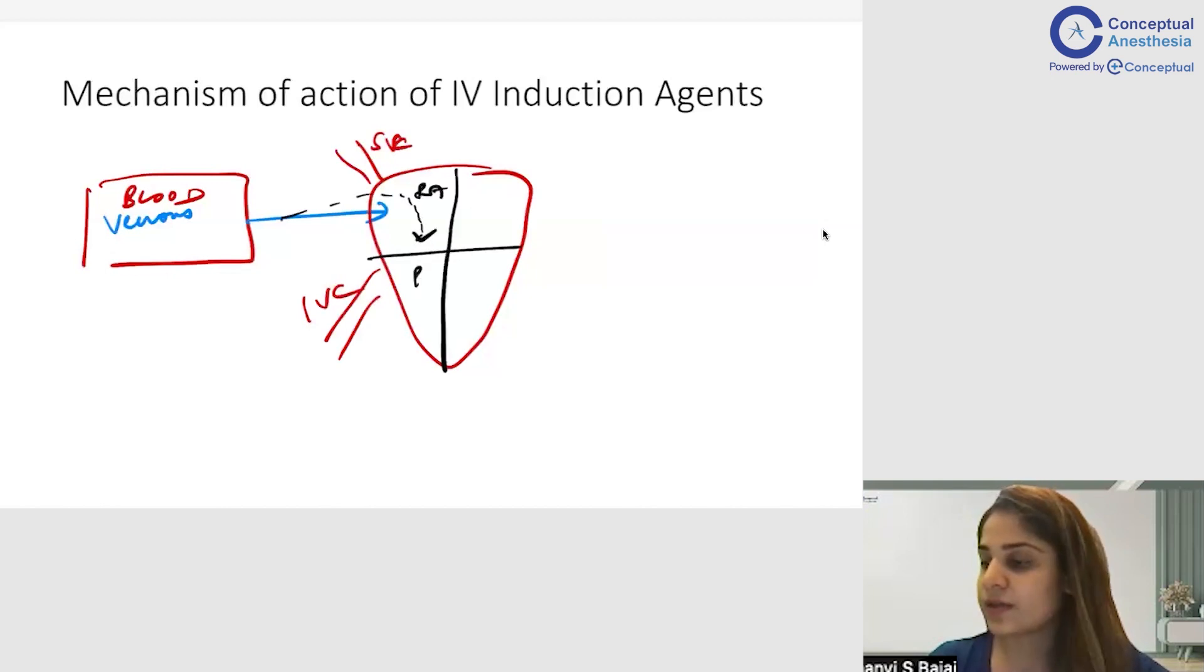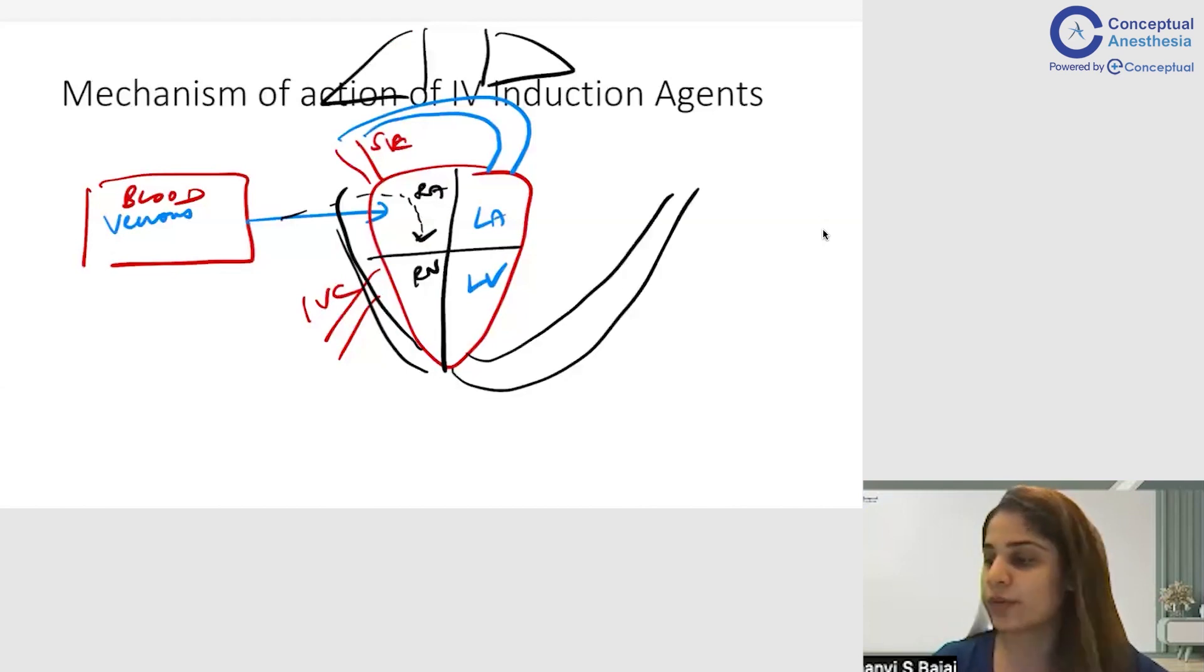Now from the right side of the heart, this drug will then be carried to the lungs. And from the lungs, from the pulmonary blood vessels that are there in the lungs, this drug will again come back to the left side of the heart. And this is where the important story starts. Now from the left side of the heart, I have the major blood vessel going out that is the aorta, and this aorta will carry the blood along with my drug.